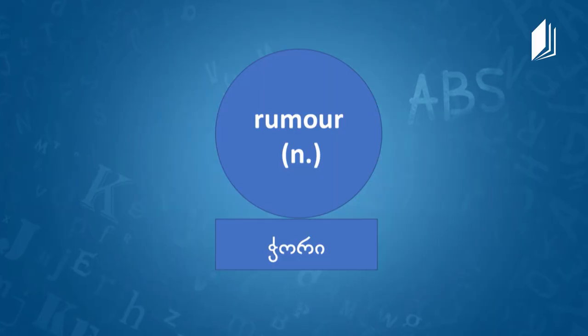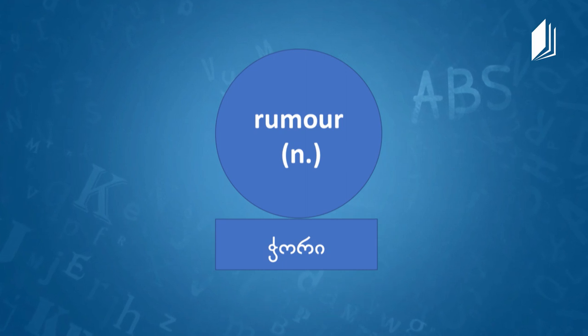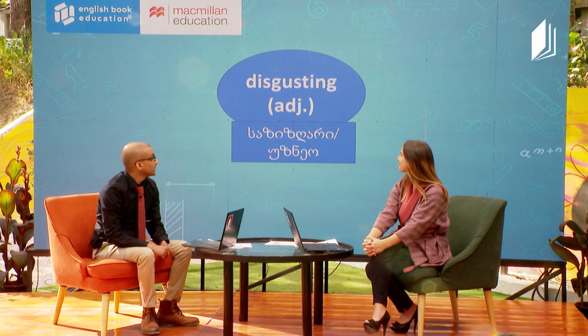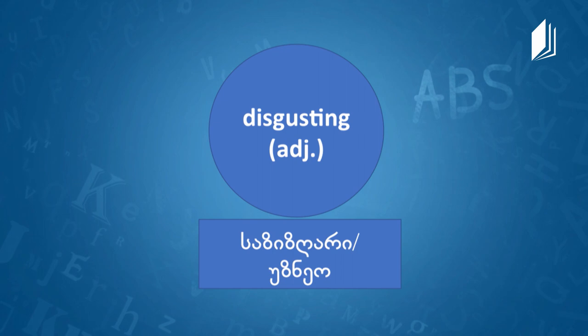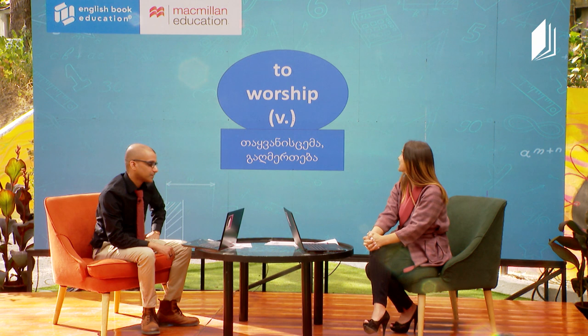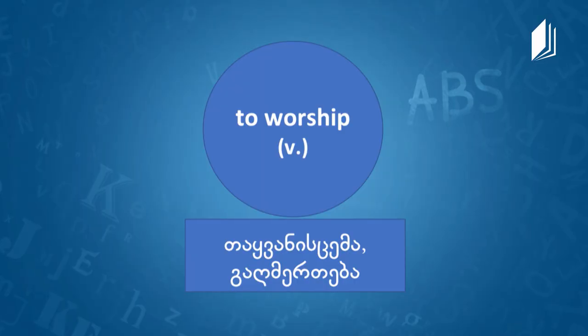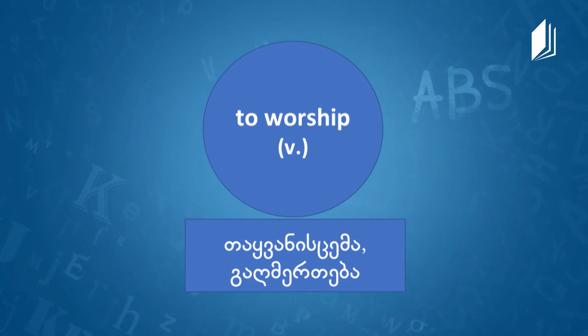Next, we have rumor — unofficial information that may or may not be true about someone or something. Then disgusting — something extremely unpleasant that you do not want to experience. And last, we have to worship — a more positive word; it's the feeling of love and respect for something higher than yourself.